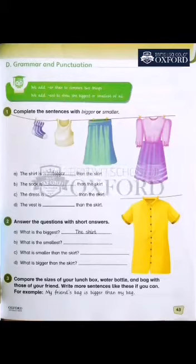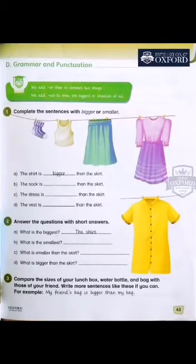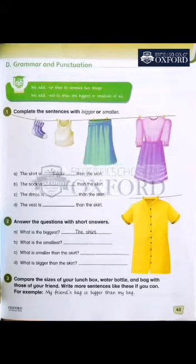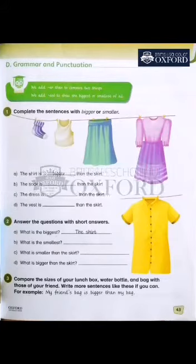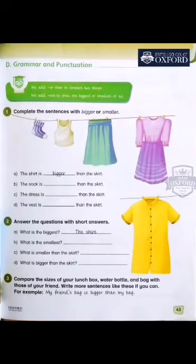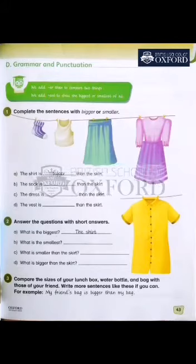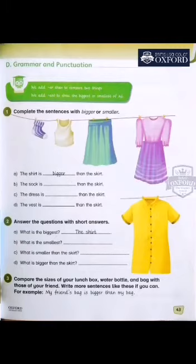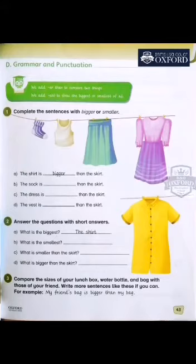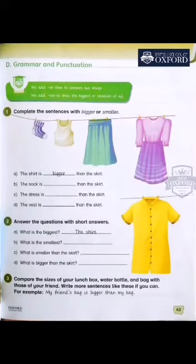Big or small — if we want to compare two things, then what do we add? ER. If we have many things and we want to tell you what the most big or most small thing is, then we add EST. But if we want to compare two things and tell you which one is bigger, then we add ER. Okay?